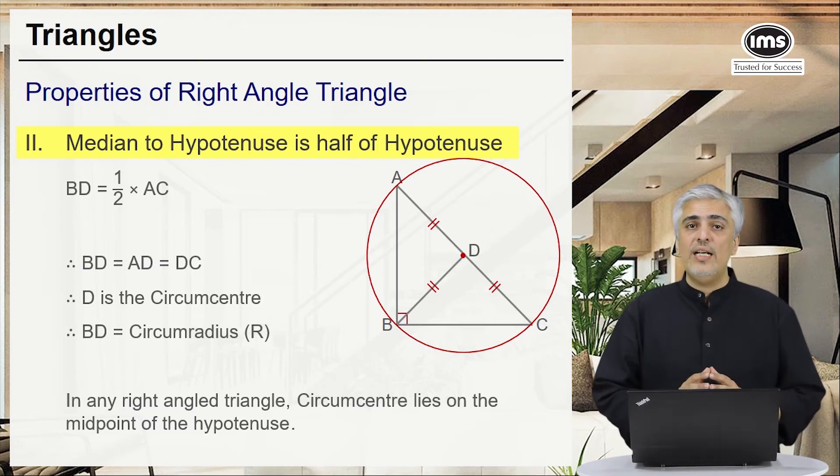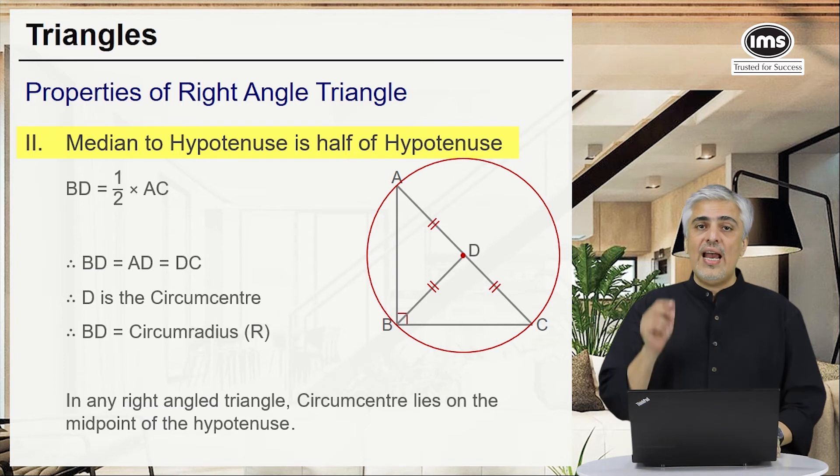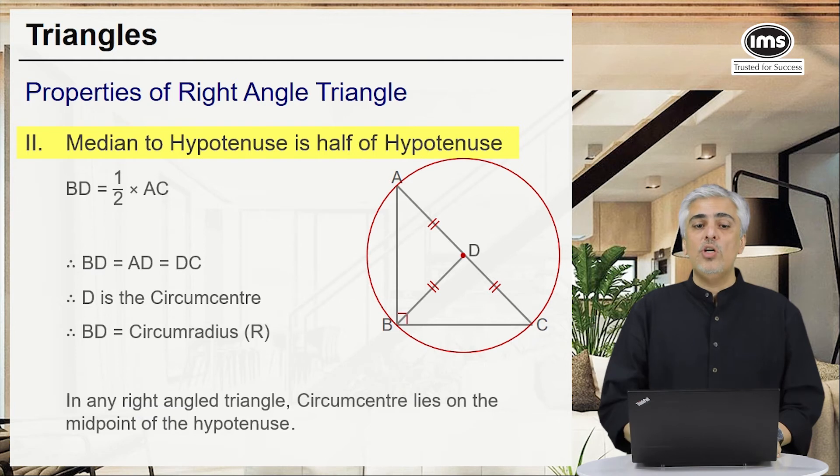Let's quickly go through that. In a right angle triangle the median drawn to the hypotenuse will be half of hypotenuse and the point D where that is the midpoint of the hypotenuse will be the circumcenter of the right angle triangle.